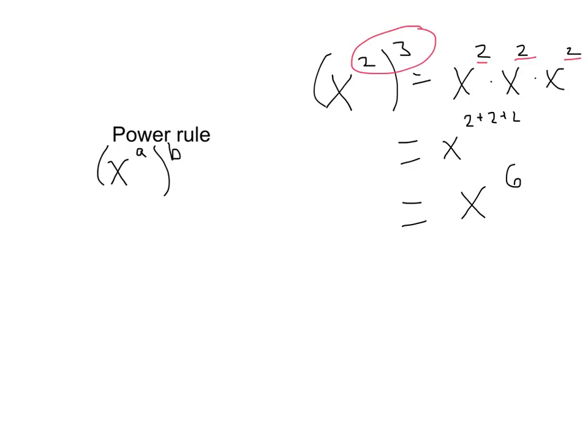Now take a look up here, and what's the relationship between 2 and 3 and this number 6 that we got? Well, they're multiplied, right? So to sum up the power rule, when you have x to the a and we raise it to the b, it's going to be x to the a times b. So we're going to multiply those up there.